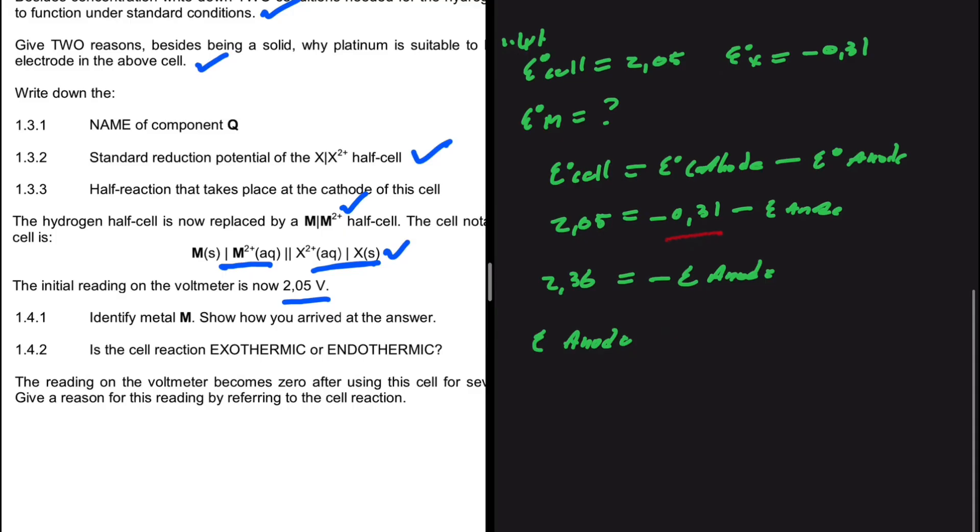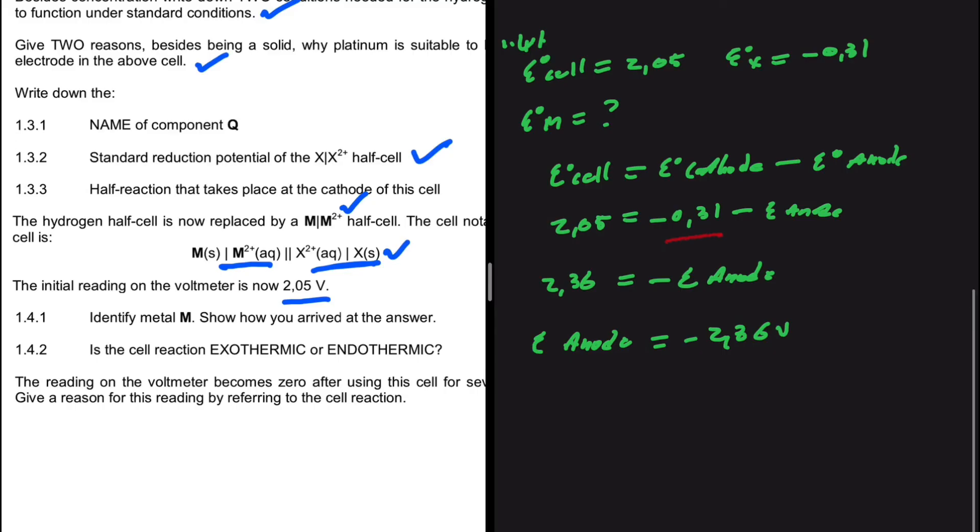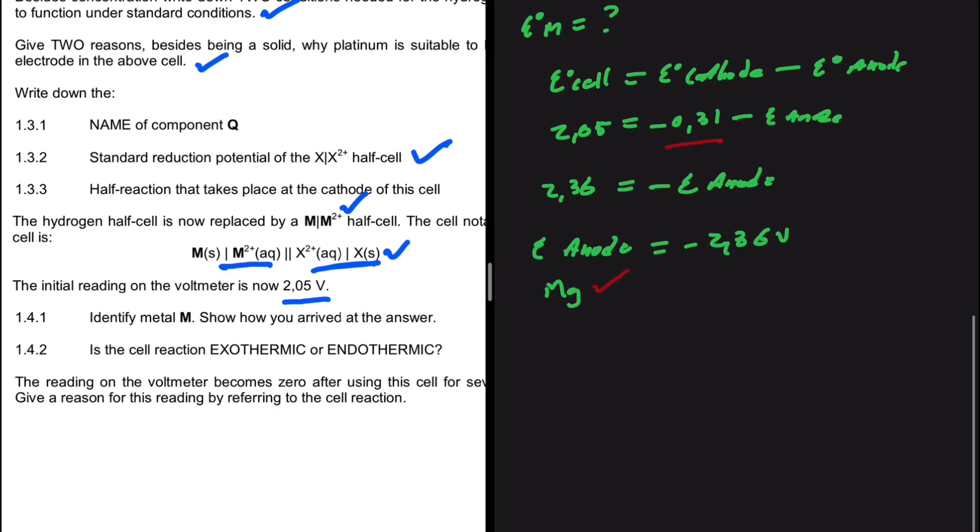If we divide both sides by minus 1, the potential at the anode will be equals to minus 2.36 volts. If we go to our table of standard reduction potentials, at the anode, we have magnesium or Mg. That is our answer to 1.4.1.